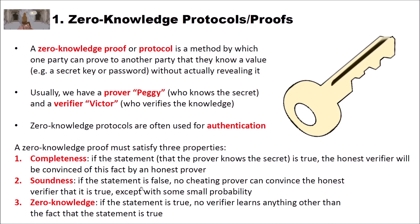What is a zero-knowledge protocol or proof? A zero-knowledge protocol or proof is a method by which one party can prove to another party that they know a value, for instance a secret key or a password, without actually revealing it. Usually we have a prover, typically named Peggy, who knows the secret, and a verifier, usually named Victor, who verifies the knowledge.